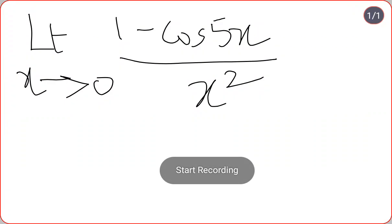Hi friends, welcome back to my YouTube channel. Today we are going to discuss one more shortcut formula related to limits. Let's see the question: the limit as x tends to 0 of (1 - cos 5x) divided by x² equals...